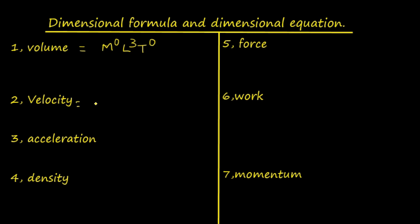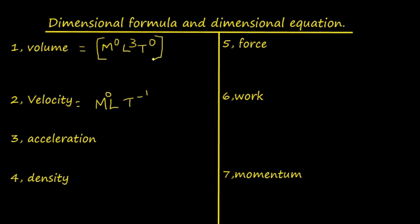Similarly, velocity is displacement divided by time. Displacement is length, so it is L divided by T. It is independent of all other fundamental quantities including mass. Time is in the denominator, so T is raised to −1. Displacement is L raised to 1, and mass is independent, so M raised to 0. The order in which they should be written is M, L, T from left to right within square brackets.